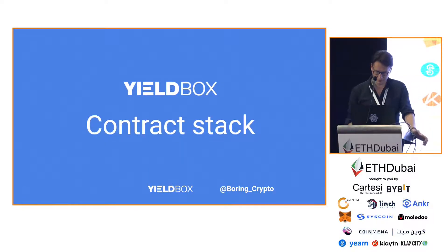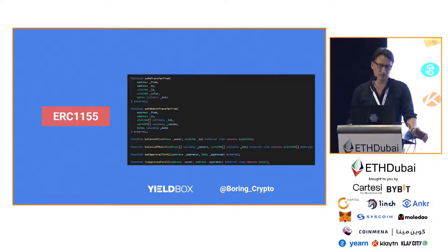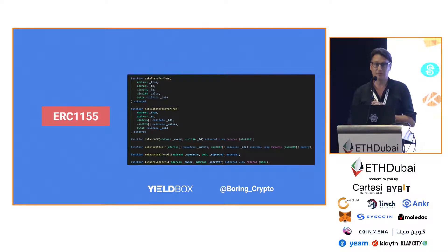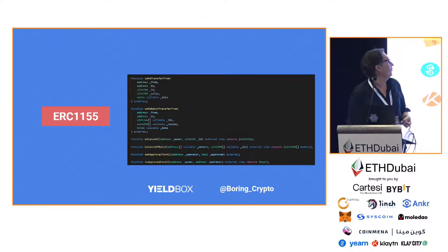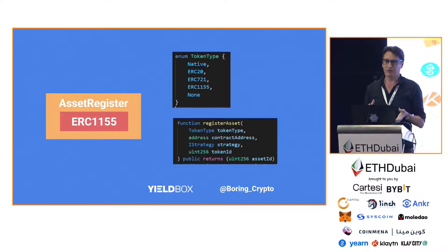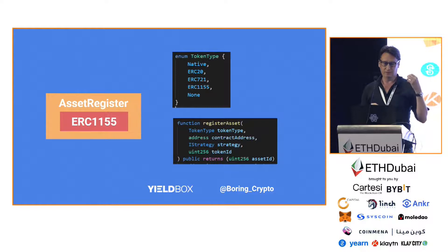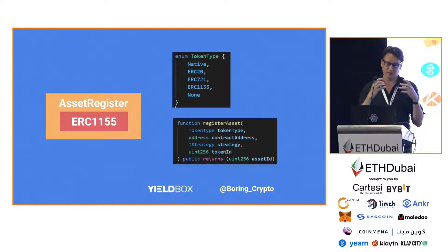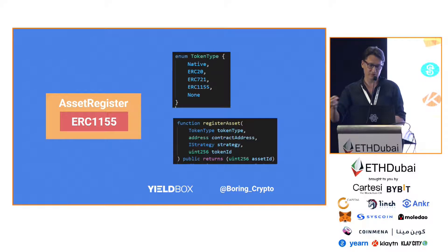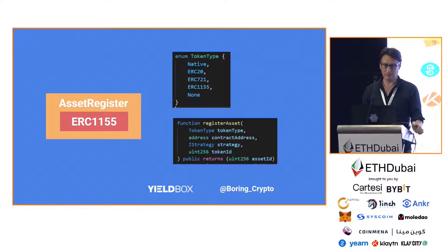Let's have a quick look at the contract stack. The core of Yieldbox is a standard ERC1155 implementation — those are just the basic functions in there. Then it gets wrapped into an asset register. That's where you register and say, I have this NFT, this token number, I want to combine it with this strategy — give me an asset ID for that. From then on, you can just use it as an asset, whether it's an ERC20 token or whatever you want to put in there.